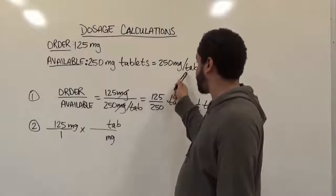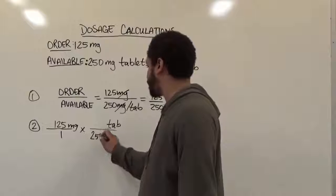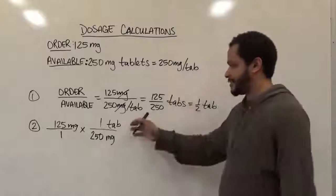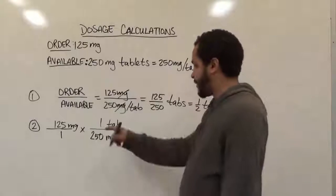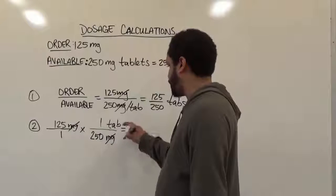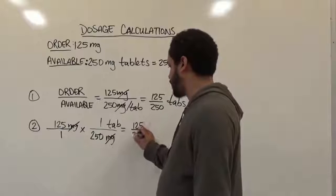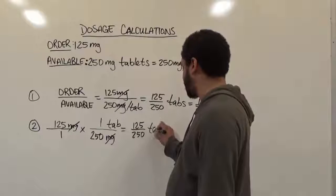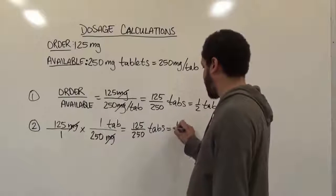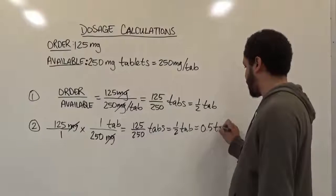We take the quantities of each and place them in the fractions. The 250 goes with the milligrams and the 1 goes with the tabs — whenever you don't see a number, it's just 1. Just like the last method, the milligrams will be removed, and we have 125 times 1, which is 125 over 250, and this is in tabs. This again becomes one half of a tab. We can also write this as a decimal: 0.5 tabs.